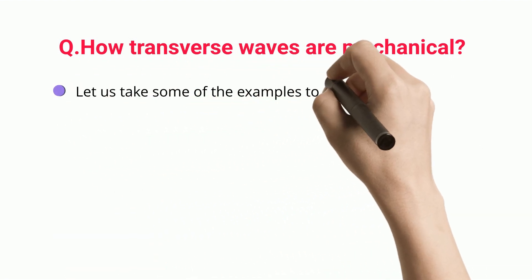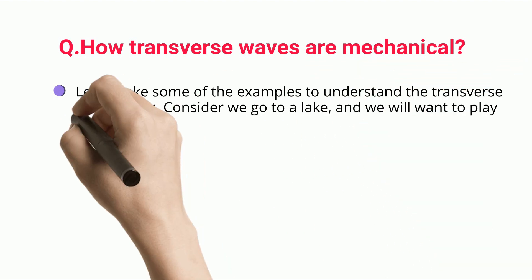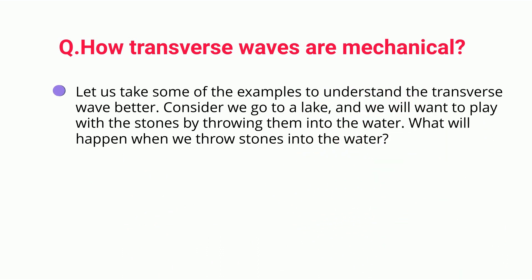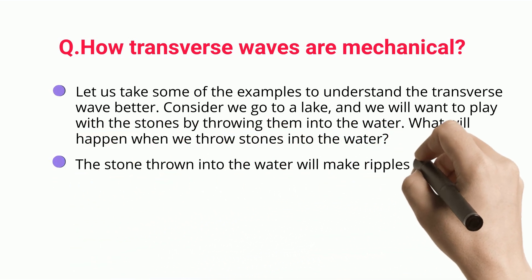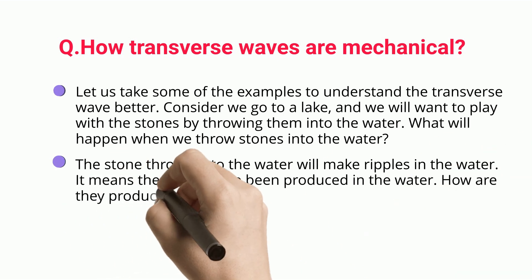Let us take some examples to understand the transverse wave better. Consider we go to a lake and we want to play with the stones by throwing them into the water. What will happen when we throw stones into the water? The stone thrown into the water will make ripples in the water. It means the waves have been produced in the water.